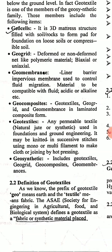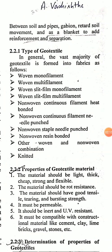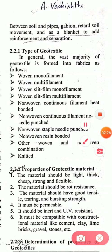Definition of geotextiles: the prefix 'geo' means earth and 'textile' means fabric. The Society for Engineering in Agriculture, Food, and Biological Systems defines a geotextile as a fabric or synthetic material placed between soil and pipes or gabions to retard soil movement and as a blanket to add reinforcement and separation.